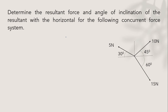A concurrent force system is one in which two or more forces come and meet at a point. Here you can see three forces — 5, 10, and 15 Newton — joining at this point. This is a concurrent force system inclined with some inclinations, and we need to calculate the resultant force and also the angle of inclination of this resultant with the horizontal.